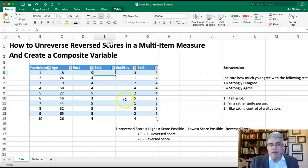Now we need to unreverse these scores, and the way that we can do it is with this formula here. The unreversed score equals the highest score possible plus the lowest score possible minus the reversed score. Now, this is a one to five scale, so the highest score possible is five and the lowest score possible is one. So we're going to say that the unreversed score is five plus one minus the reversed score, or six minus the reversed score. So we're going to put that in the formula here. So I click in the cell and I'm going to use an Excel formula.